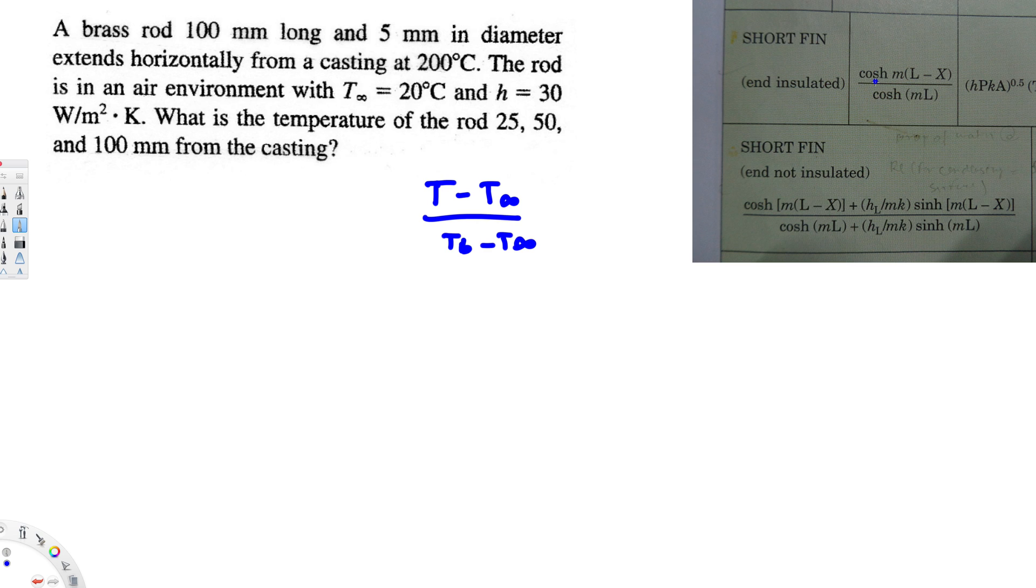We use this equation with hyperbolic functions: m times L minus x. Now, if you notice in the question they haven't mentioned whether it's insulated at the end or not. So whenever we don't have enough information about insulation, we have to use the second equation.